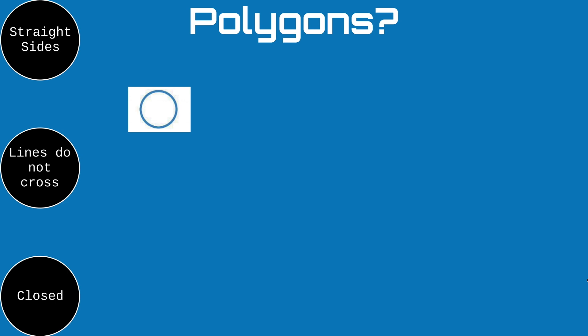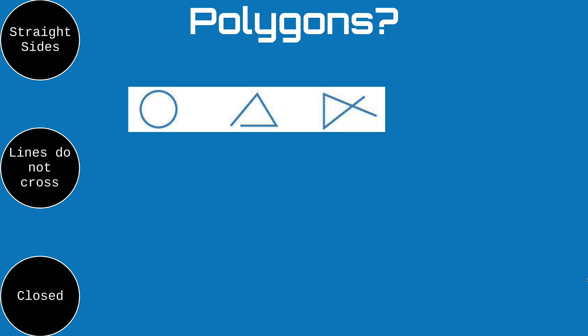Let's take a look at this shape. This shape has straight sides. The lines do not cross. However, it is not a closed shape — you can see on the bottom there's a little gap. So this shape is also not a polygon. This shape appears to have straight sides and appears to be at least partly closed, but the lines cross. None of these three shapes are polygons.